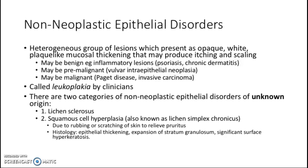There are two types of lesions when their origin is unknown. First is lichen sclerosis, and squamous cell hyperplasia or lichen simplex chronicus. Squamous cell hyperplasia happens when the patient keeps rubbing the skin to relieve the itchiness associated with the lesion, and histologically you will see epithelial thickening, expansion of the stratum granulosum of the epithelium, and significant surface hyperkeratosis.